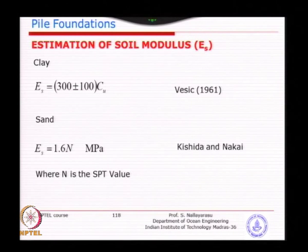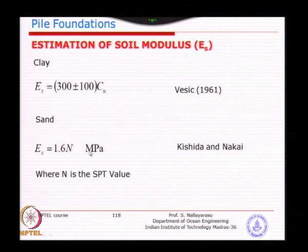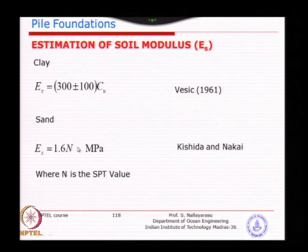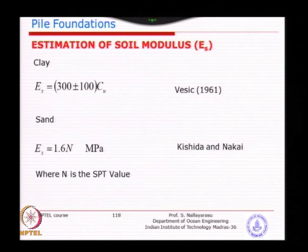Earlier I gave an empirical relationship: Cu versus ES as proposed in the 1960s. Also N-value related to ES - we will use the simplified formula ES equals 1.6 times N value, which is easy to remember. We will use this for some of the upcoming examples.